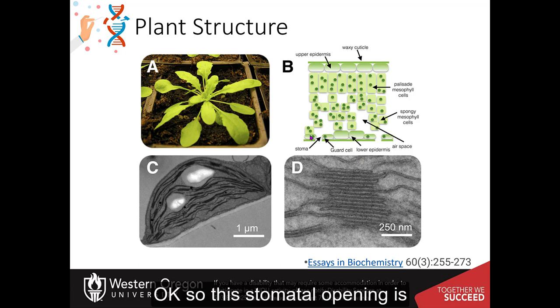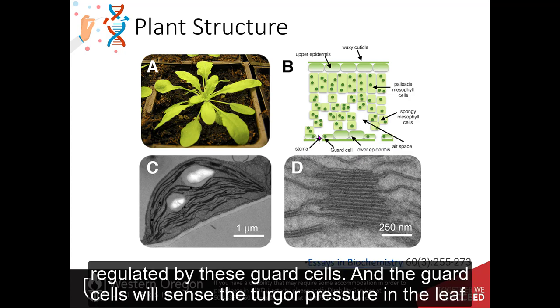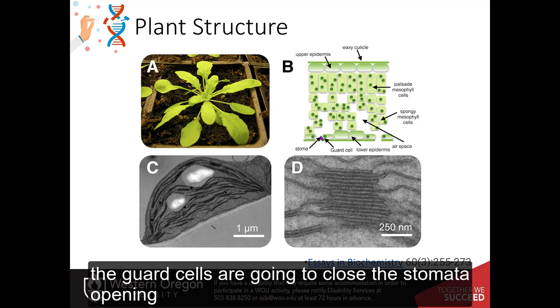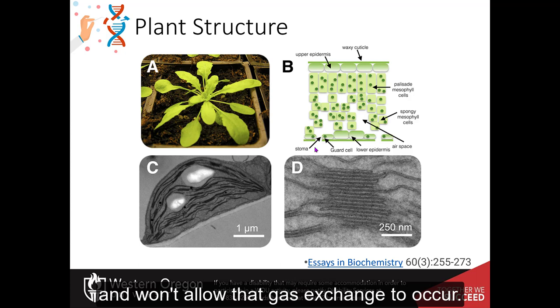Okay, so this stomatal opening is regulated by these guard cells. And the guard cells will sense the turgor pressure in the leaf. So if the plant really starts wilting and losing water, it's going to lose that turgor pressure. The guard cells are going to close the stomata opening and won't allow that gas exchange to occur.